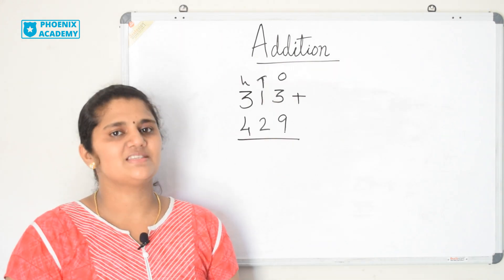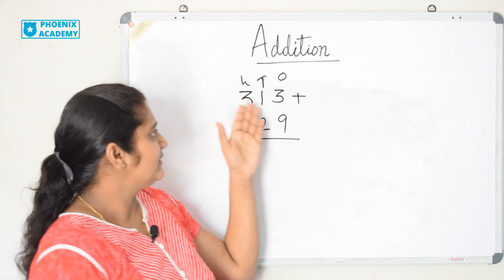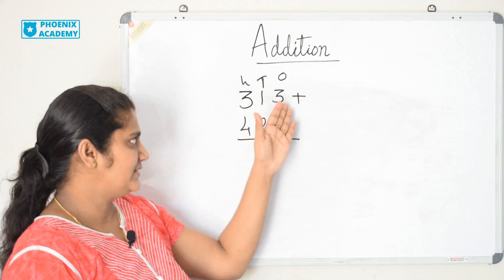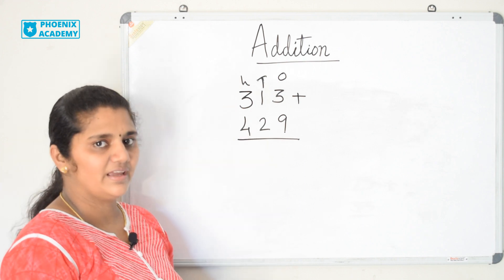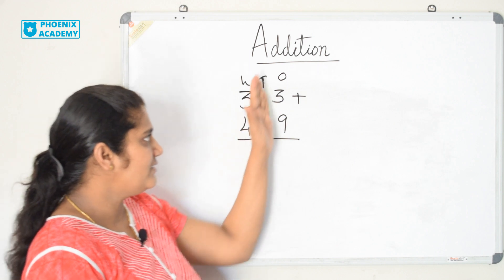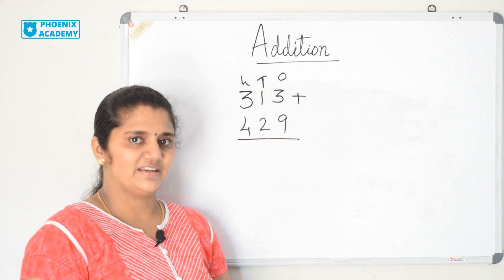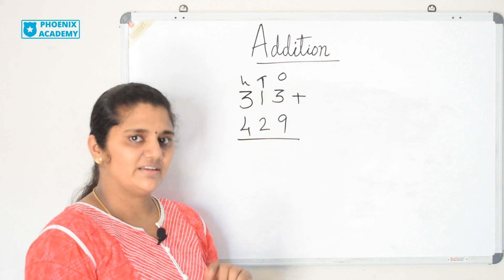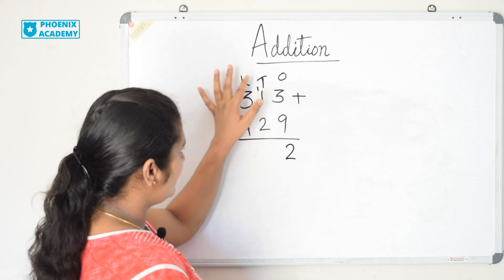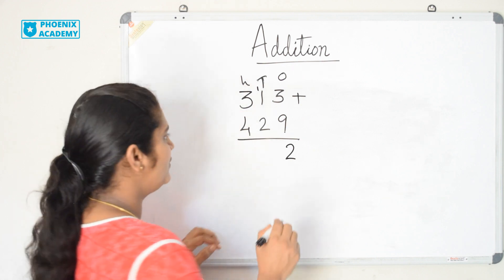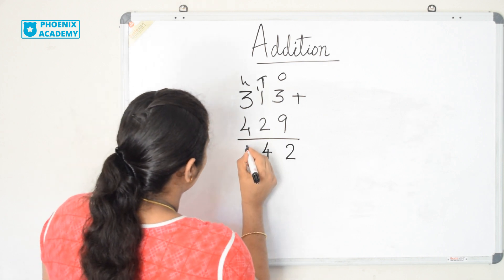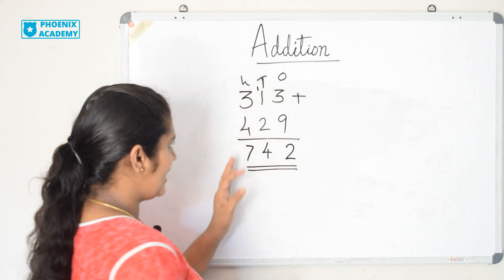Now let us learn addition of 3-digit numbers with regrouping. Let us solve this example: 313 plus 429. 313 is 3 ones, 1 ten, and 3 hundreds. 429 is 9 ones, 2 tens, and 4 hundreds. Let us add ones first: 3 plus 9 is 12. 12 is 2 ones and 1 ten, so we write 2 and carry 1 to the tens place. Add tens: 1 plus 1 is 2, plus 2 is 4. Add hundreds: 3 plus 4 is 7. So the answer is 742.